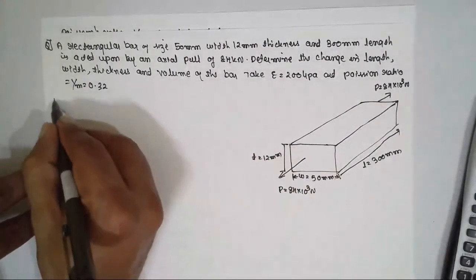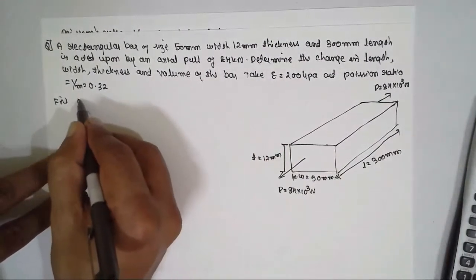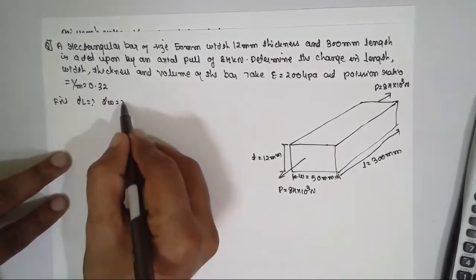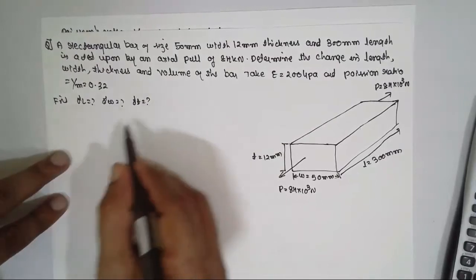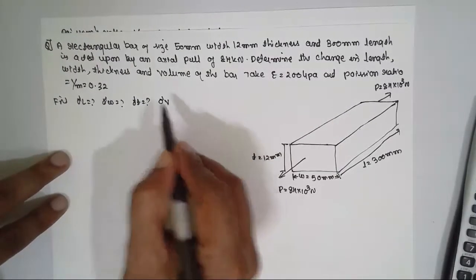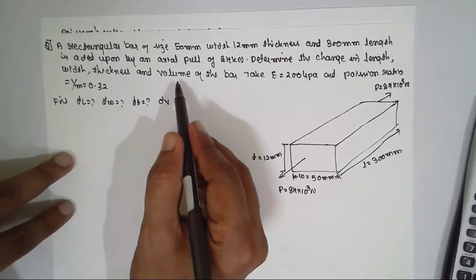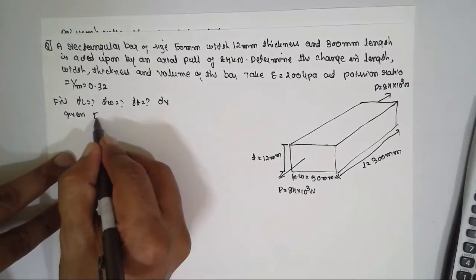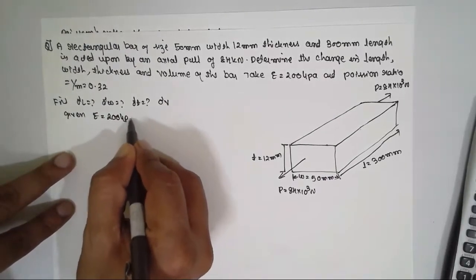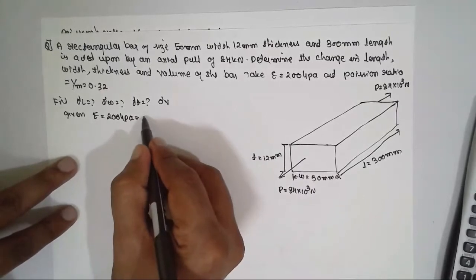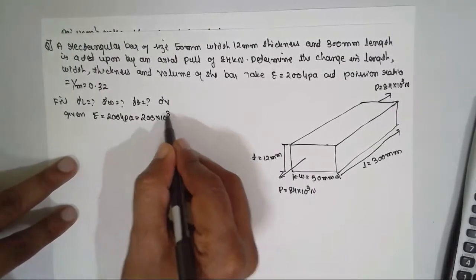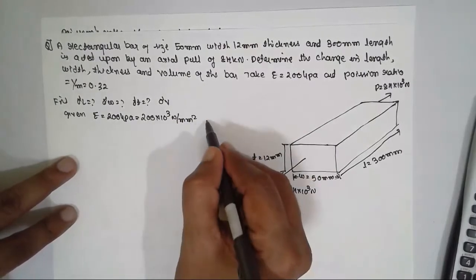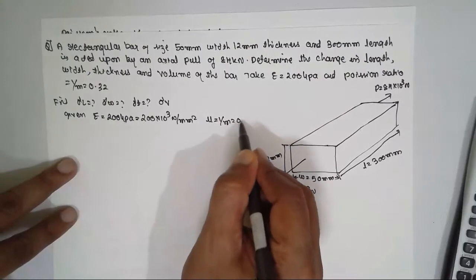Determine the change in length ΔL, change in width ΔW, change in thickness ΔT, and change in volume ΔV. Given: Young's modulus E = 200 GPa = 200 × 10³ Newton per mm², and Poisson's ratio μ = 0.32.